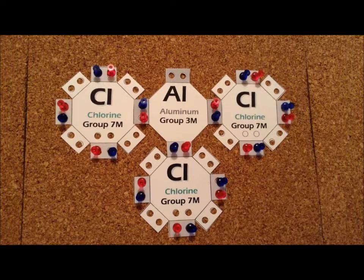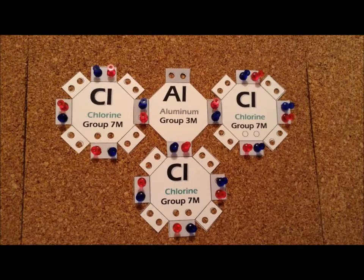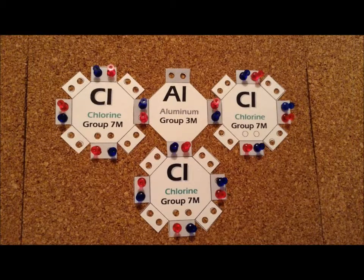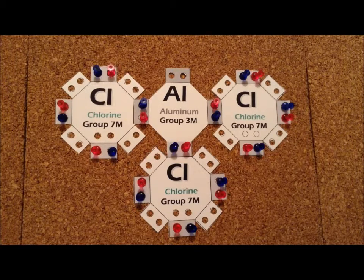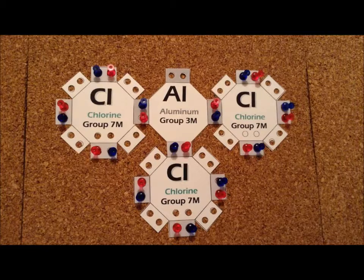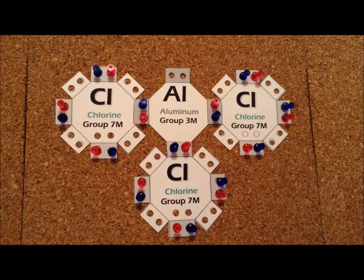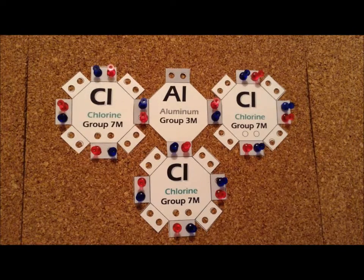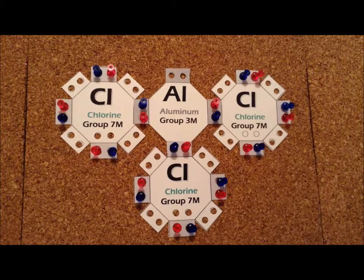We realize in this particular structure, the only element that does not have a complete octet is aluminum. It only has six electrons, but then we recall that for elements in the third column, they are very often electron deficient in their molecules, particularly when they are in compounds where they act as Lewis acids. So that's what we see in this particular case, and this would lead us to believe that aluminum chloride would be a Lewis acid, and it turns out that is absolutely true.